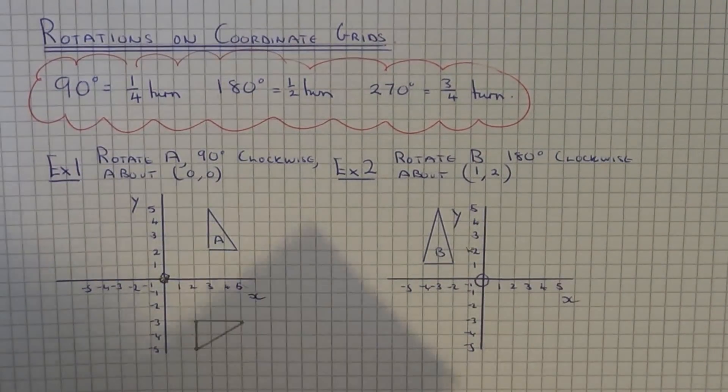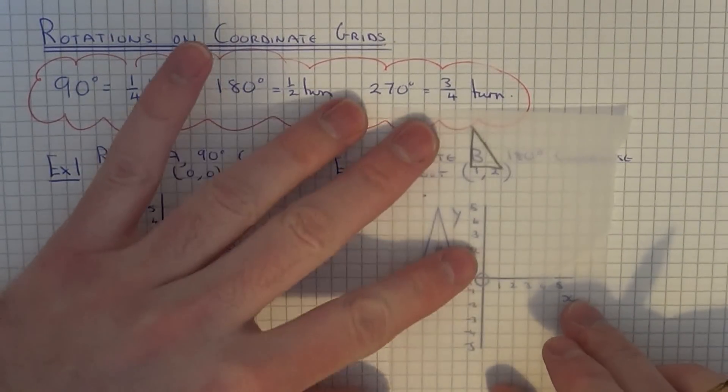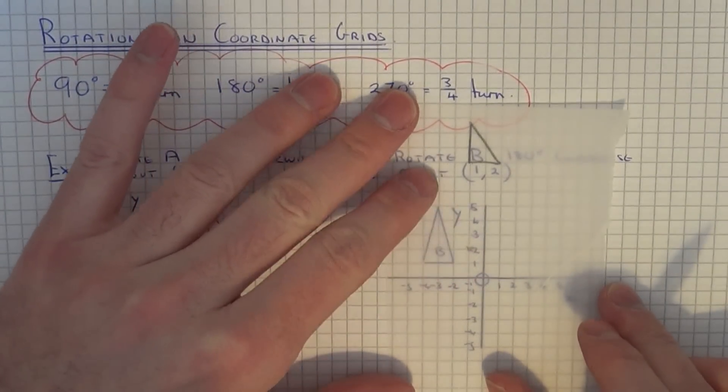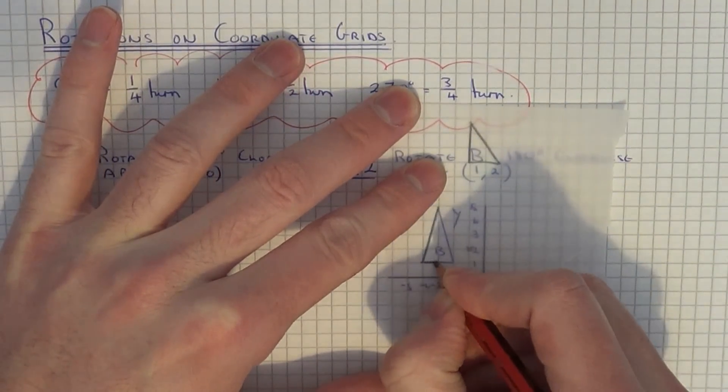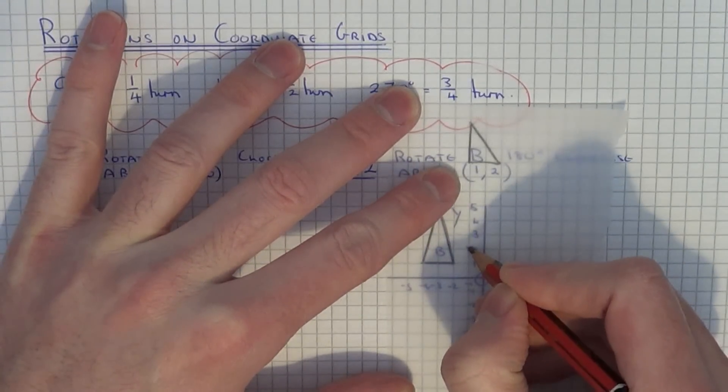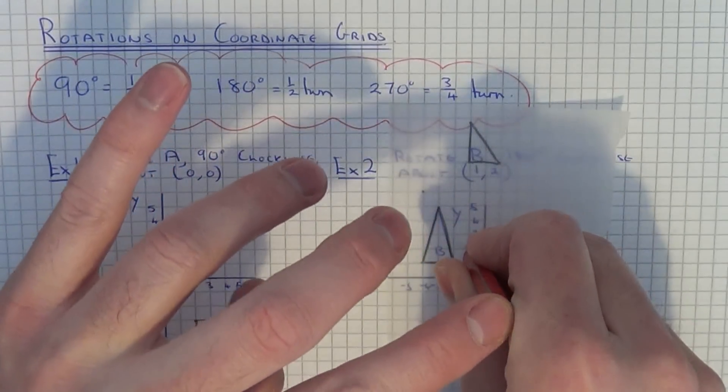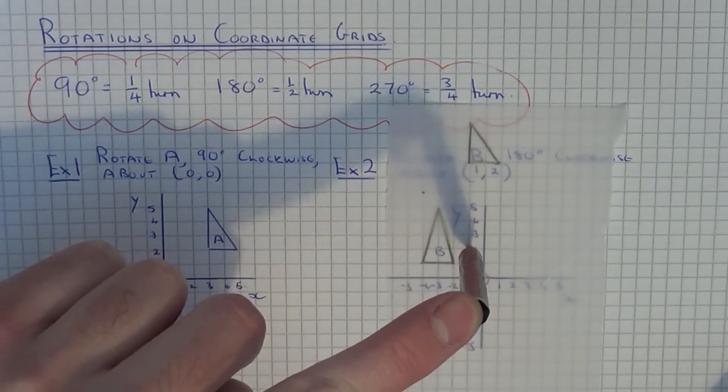Now get your tracing paper. Trace your shape, make sure you can fit in the centre of rotation. I'm going to put the pencil on the centre of rotation. This time it's 180 degrees clockwise turn.